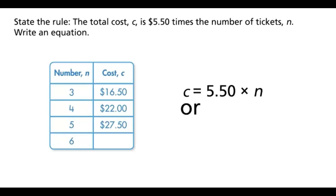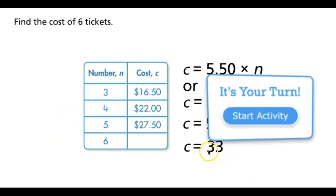State the rule: the total cost c is $5.50 times the number of tickets n. Write an equation. That will be the rule that applies for this table. Whatever number you can apply for n will be applicable. If you want to check, 5.5 times 6 gives you 33.